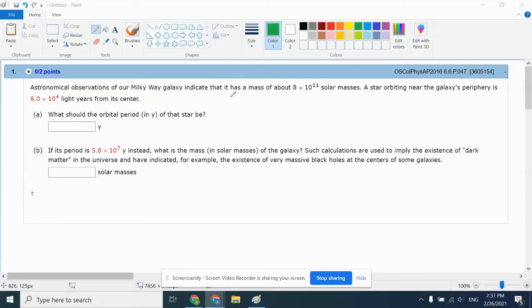Let's take a look at WebAssign UGO3. Our first problem talks about astronomical observations of our Milky Way indicating approximately 8 times 10 to the 11th solar masses. A star orbiting near the galaxy is 60,000 light years from the center. The question is what should the orbital period be in years? That means we've got to do quite a bit of conversions here.